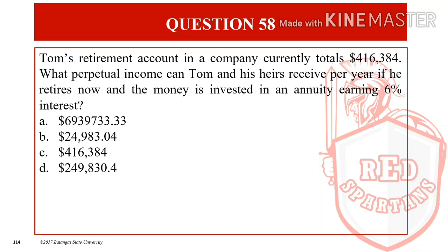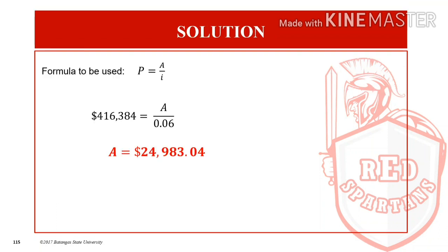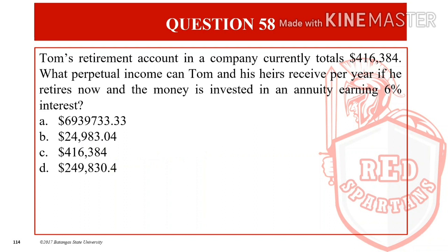For question number 58, Tom's retirement account currently totals $416,384. What perpetual income can Tom and his heirs receive per year if he retires now and the money is invested in an annuity earning 6% interest? This is a perpetuity problem. Using P = A/I, we solve A = P × I = $416,384 × 0.06 = $24,983.04 each year. Answer is letter B.